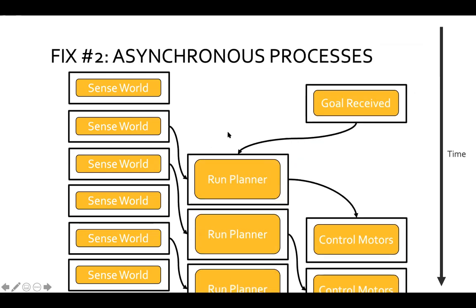The second step might be actually allowing processes to work asynchronously. For example, let's say we have some planner — we don't actually need to plan until we have a goal. Once that goal has been sent off, we don't really care; that process can finish. Not everything needs to happen at once is maybe the point to take from this.